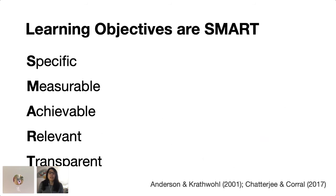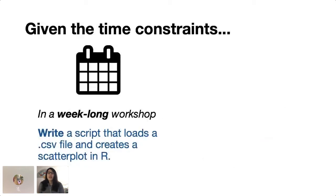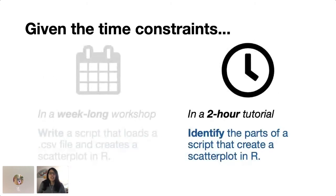So for example, given the time constraints, in a week-long course, we might ask learners to generate a script for a scatterplot. So our learning objective might be write a script that loads a CSV file and creates a scatterplot in R. So in a week-long, we can ask them to generate new material. In contrast, if we only have two hours with our students, we might just be equipping them with the skills to get started. So maybe for a two-hour tutorial, my objective might be identify the parts of a script that create a scatterplot in R. And these are important considerations to create flexible objectives for our different learning environments and learners.